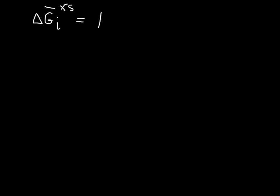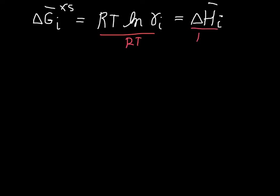We have that the partial molar excess Gibbs free energy, delta G̅_I^excess, is equal to RT·ln(γ_I). For the regular solution model, this equals the change in the partial molar enthalpy for component I — that's the excess quantity in the regular solution model. We can rearrange this by dividing both sides by RT and taking the exponent, which gives us: γ_I = exp(ΔH̄_I / RT).